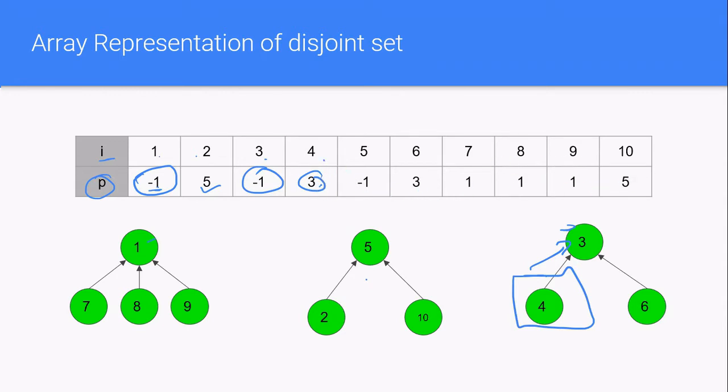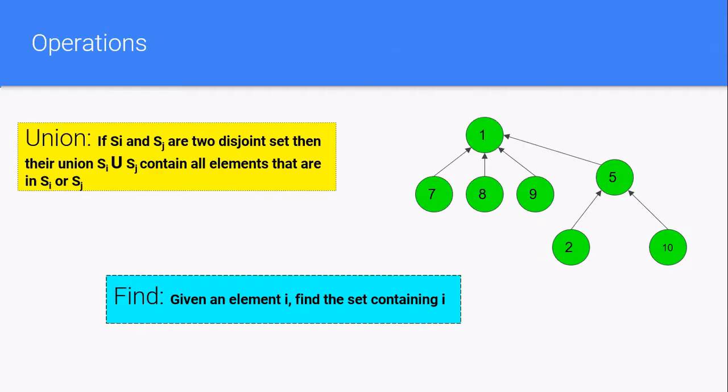This is how we will represent every element in a disjoint set using a two-dimensional array. Now there are mainly two operations happening in a disjoint set: union operation and find operation.